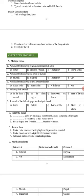Which of the following is not a crossbreed? Karan Swiss is a crossbreed of cattle, Karan Fries is a crossbreed of cattle, Vrindavani is a crossbreed of cattle — Gir is an indigenous breed of cattle, so Gir is the correct answer here.